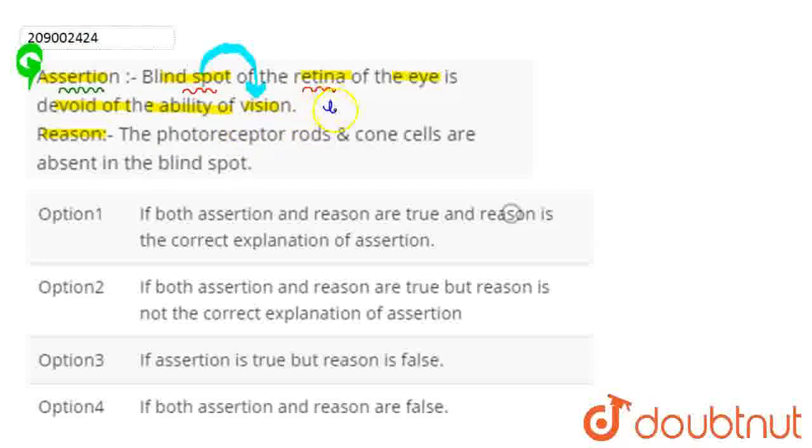This is because the blind spot is a location in the retina which we call optic disc, and here, the optic nerve fiber exits at the back of the eye.